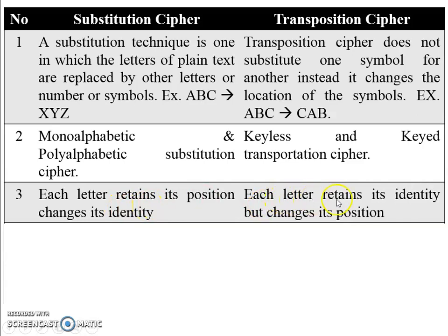In transposition cipher, each letter retains its identity but changes its position. In this example you can see A, B, C — in the ciphertext A, B, C is still there, but the position of A, B, C is changed. So there is no substitution.